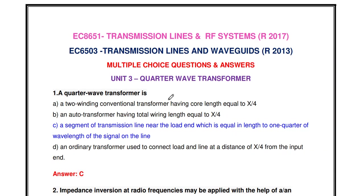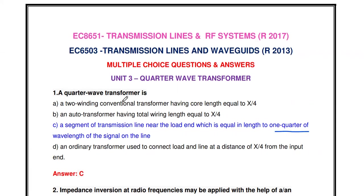A quarter wave transformer is nothing but a segment of transmission line near the load end, which is equal in length to one quarter of the wavelength. That is why the name is quarter wave line — the length of that line is λ/4.